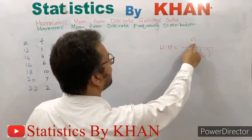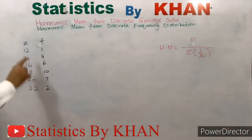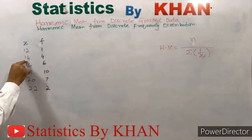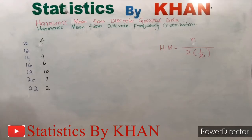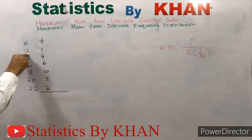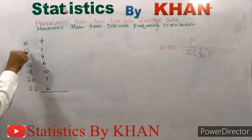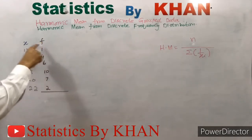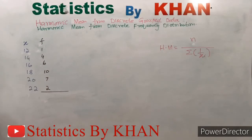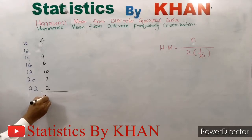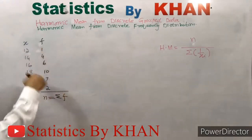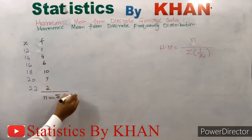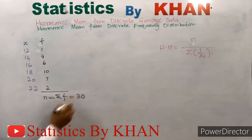In the formula, n represents the total number of observations. In the data set, 12 has occurred once, 14 has occurred four times, 16 has occurred six times, and similarly for the rest. Each value of f shows the corresponding repetition of the variable. If we add all values of the f column, it gives the total number of observations, so n equals summation f.